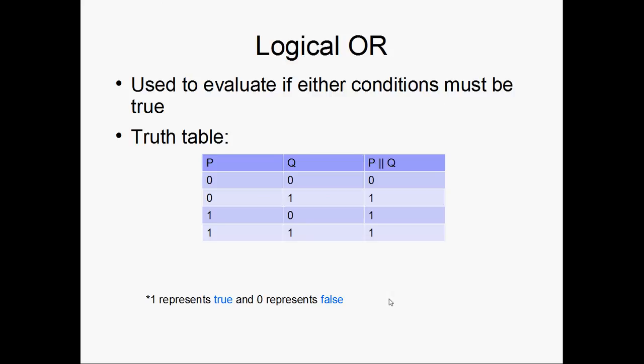So logical OR, similar explanation here. We use it to evaluate if P is true or Q is true. And I represent that with P || Q as demonstrated here. And notice that the only time it's false is when they're both false.